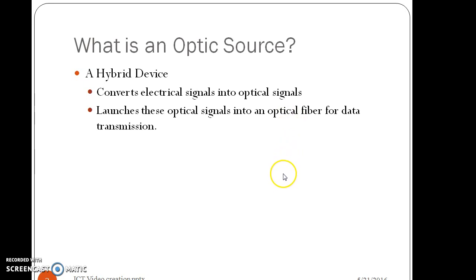What is an Optical Source? Optical Source is a hybrid device which converts electrical signal into optical signal. It also launches an optical signal into optical fiber for signal transmission.